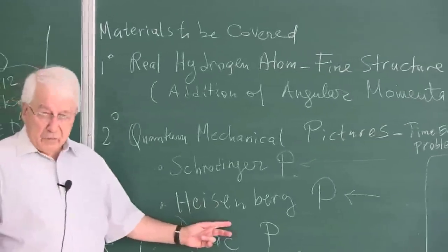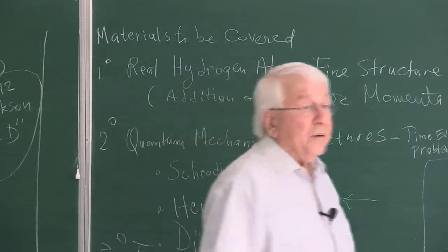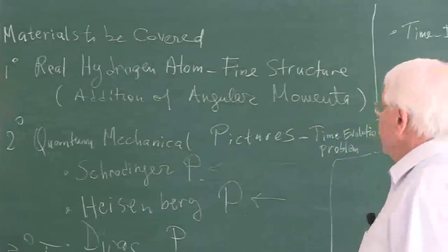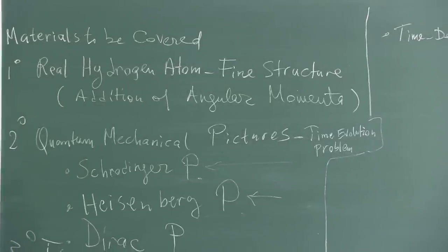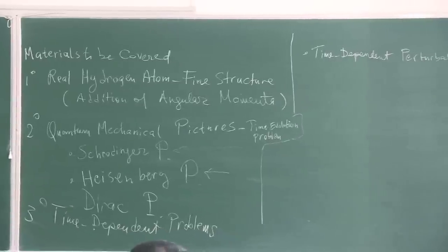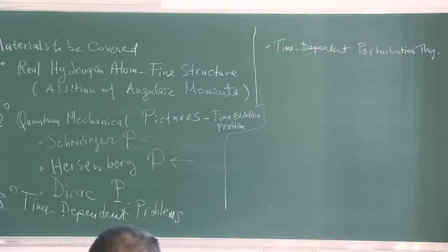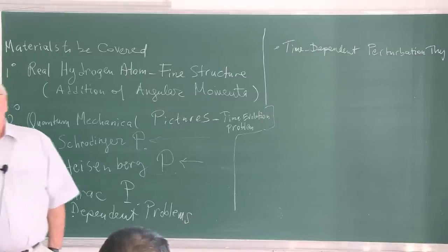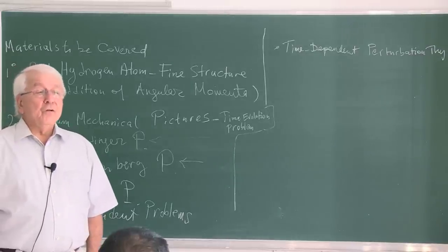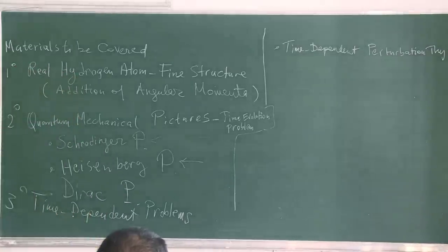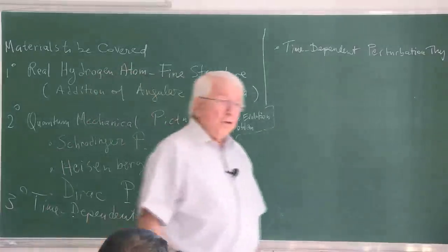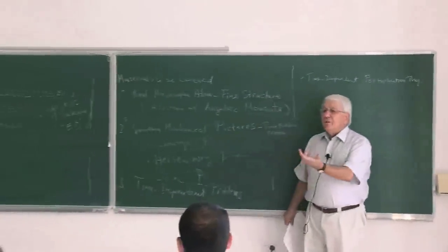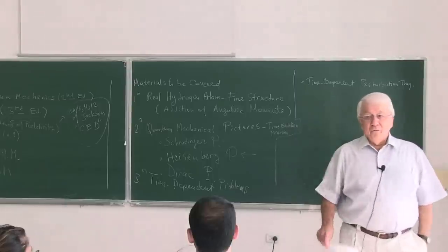In the Heisenberg picture the states are frozen in time, so it's the operators that evolve rather than the states. Time evolution is interesting because it is a formal solution of the equation of motion for the states, and the unitarity of that time evolution plays a crucial role. For example, in quantum information theory there is the important problem of coherence and decoherence — if external interferences introduce non-Hermitian effects, the time evolution is no longer unitary, giving rise to many interesting phenomena in an active research area.